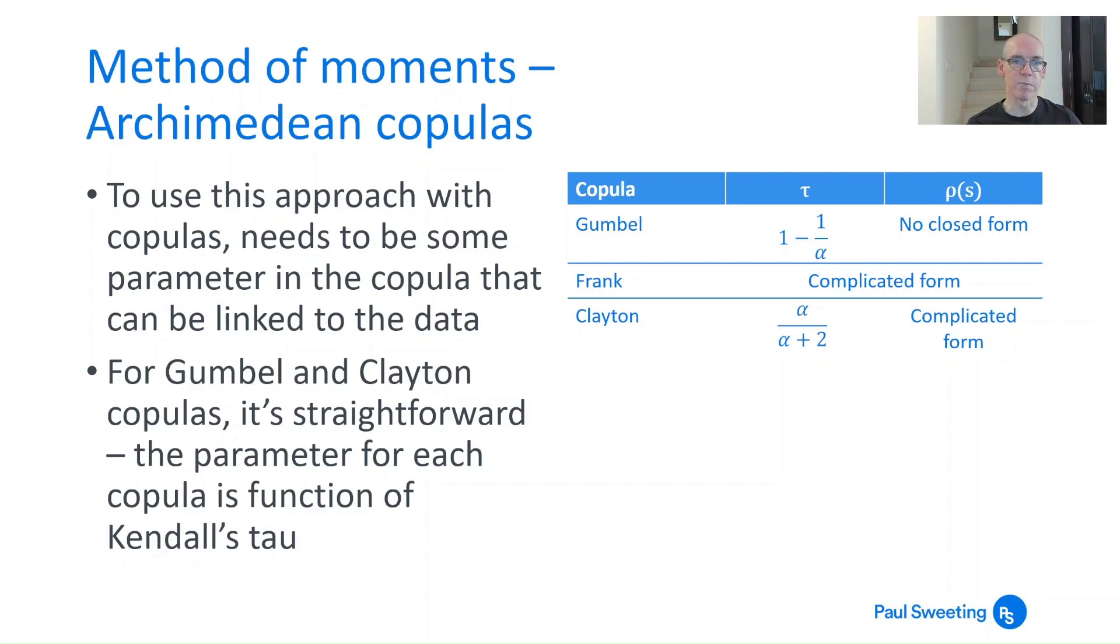For the Clayton copula, it's alpha over alpha plus 2. For the Frank copula, it's complicated. For Clayton, for Spearman's rho, it's also complicated. And Gumbel, Spearman's rho, there's no closed form. So, you need to find Kendall's tau.